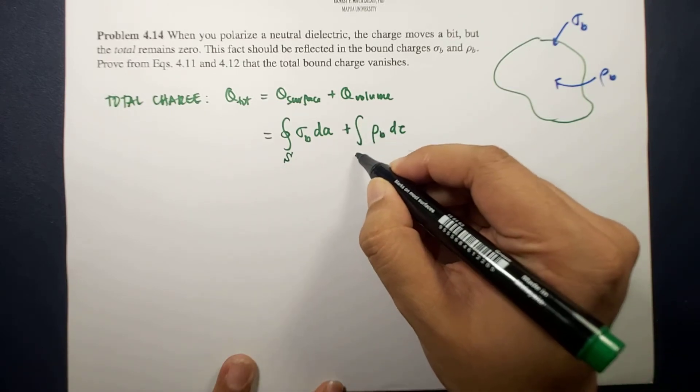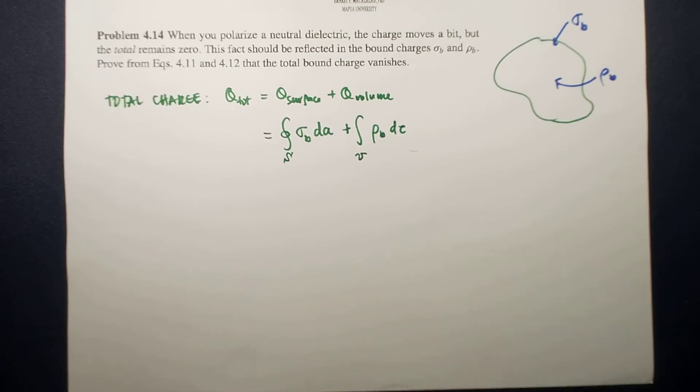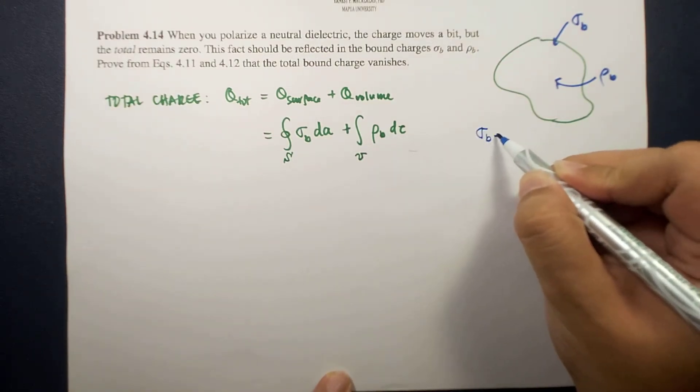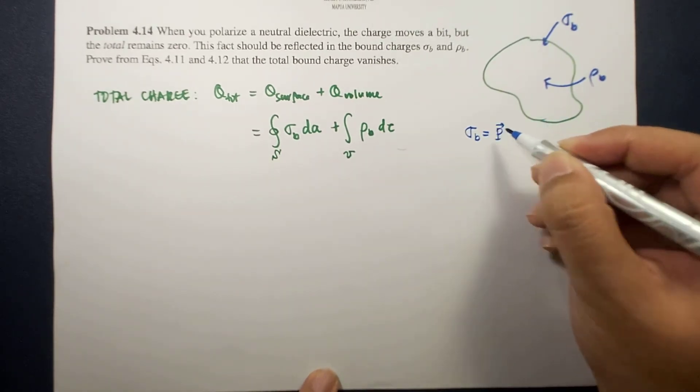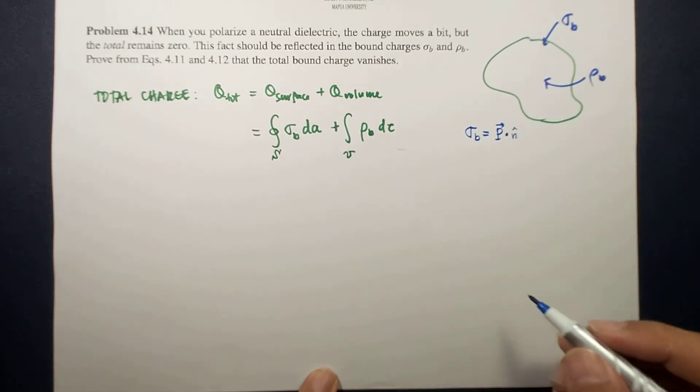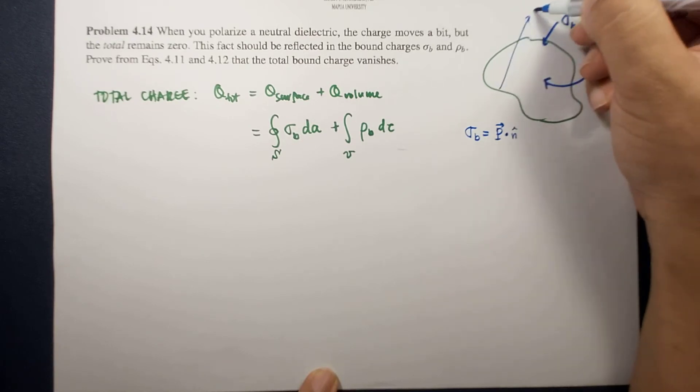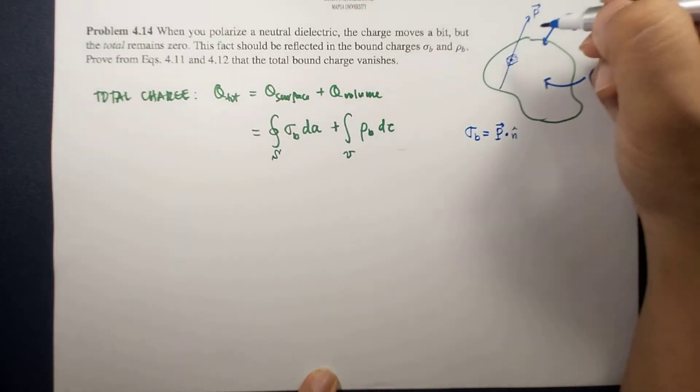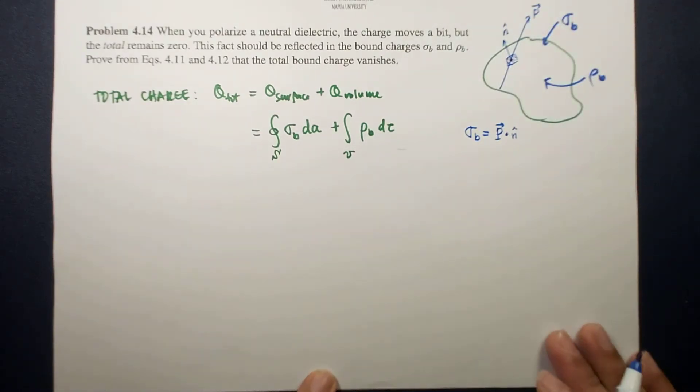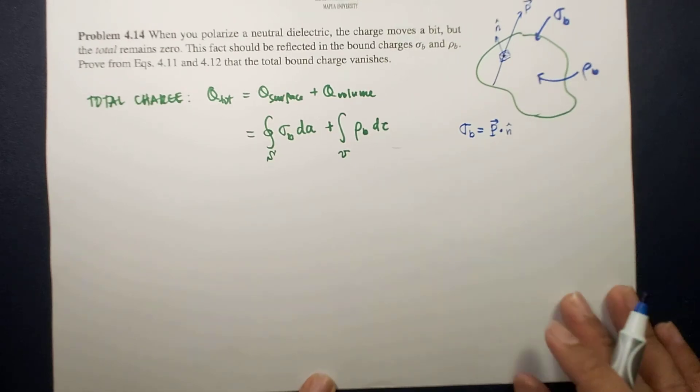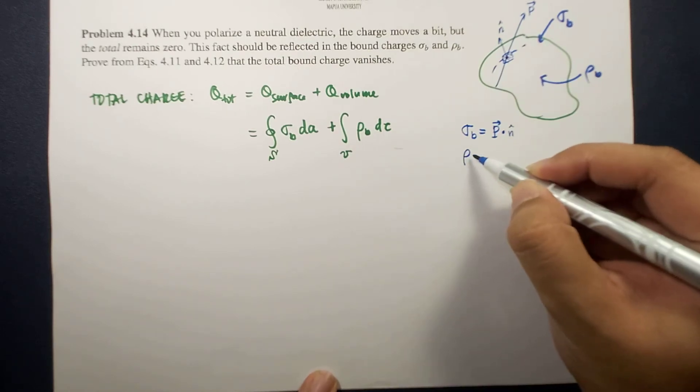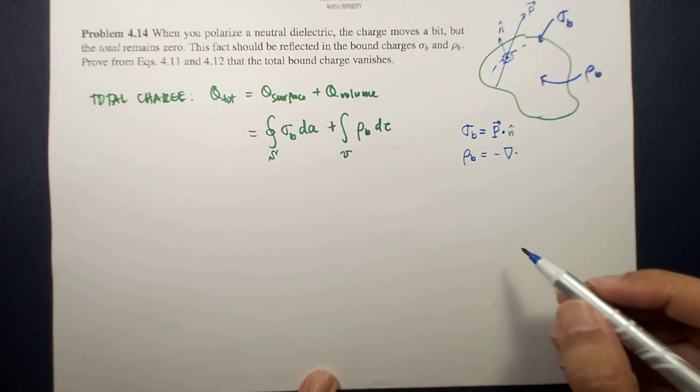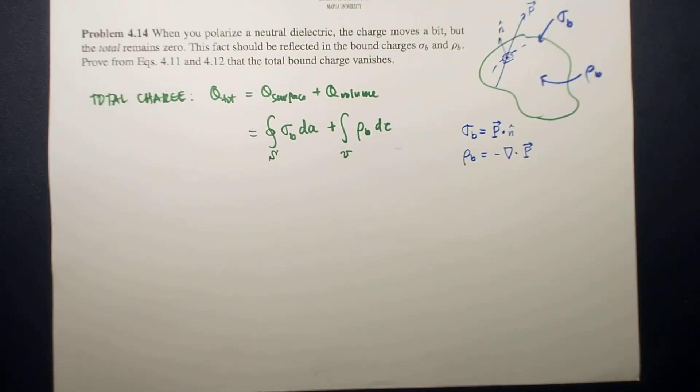Using our definition of bound charges: remember that the bound charge sigma B is equal to the dot product between the polarization and the area vector. So if this is the polarization and I say this polarization pierces here, this is your area element, this is your direction of the area vector that is normal to the surface. On the other hand, the volume bound charge within the volume, it's just the negative divergence of the polarization.